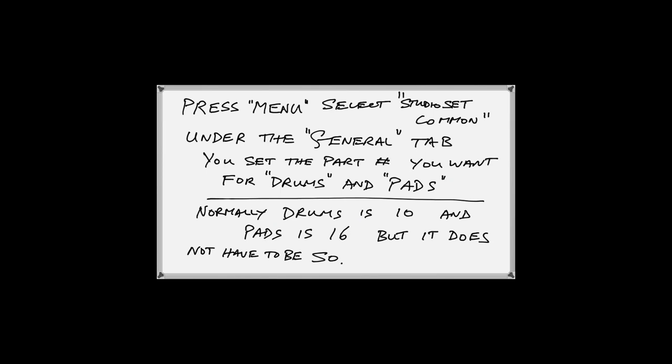To set those channel parts, press Menu, select Studio Set Common, use the General tab, and you can set the part number you want to use for drums and the part number for pads. Normally drums is on part 10 and pads is on part 16 by default, but it doesn't have to be that way.